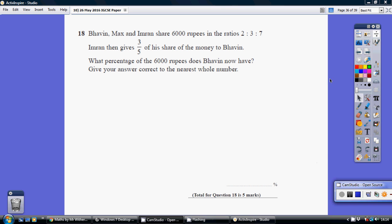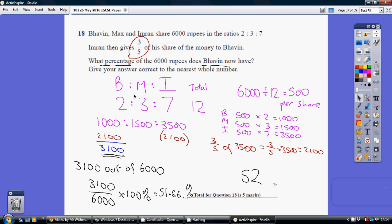Question 18: We've got Bovine, Max, and Imran sharing in the ratio 2:3:7. That's two to three to seven, but it's useful to realize that's 12 shares in total. They're going to share 6000 rupees.